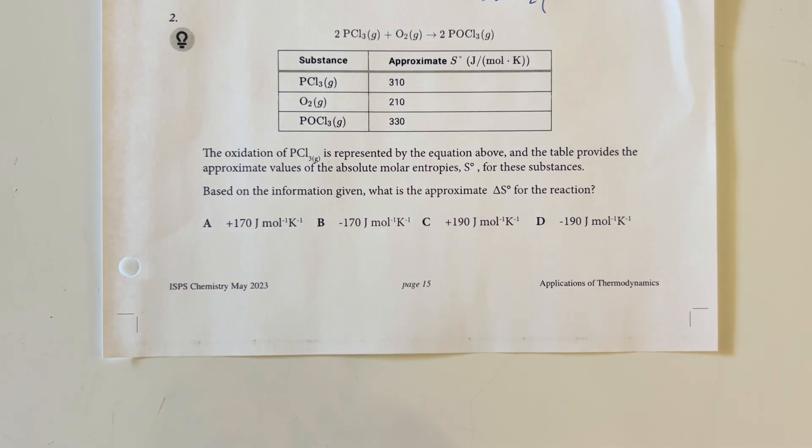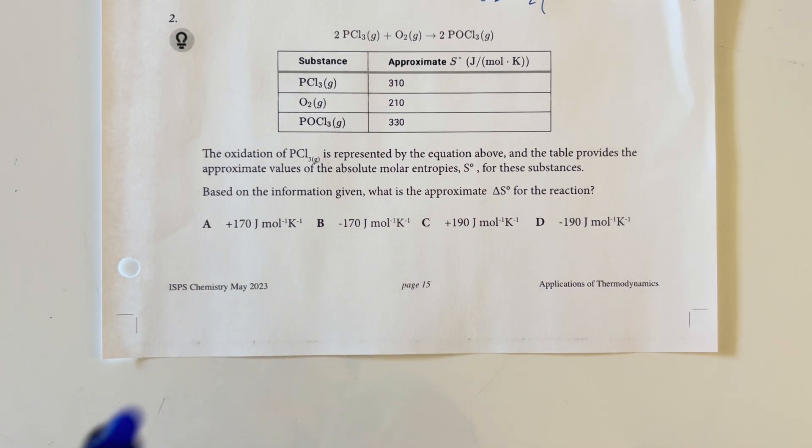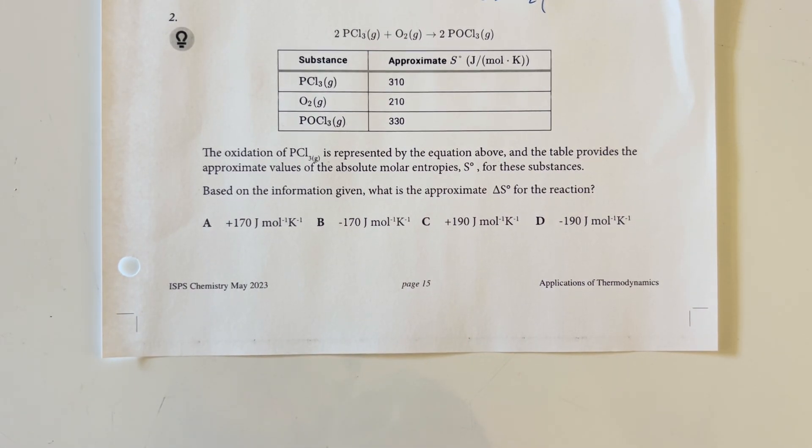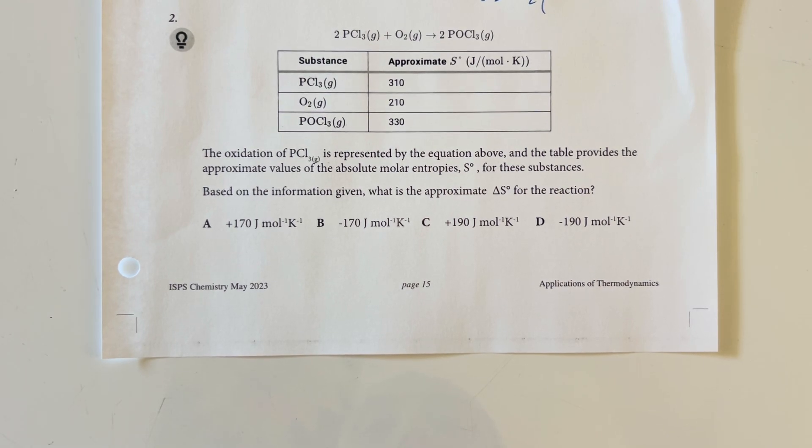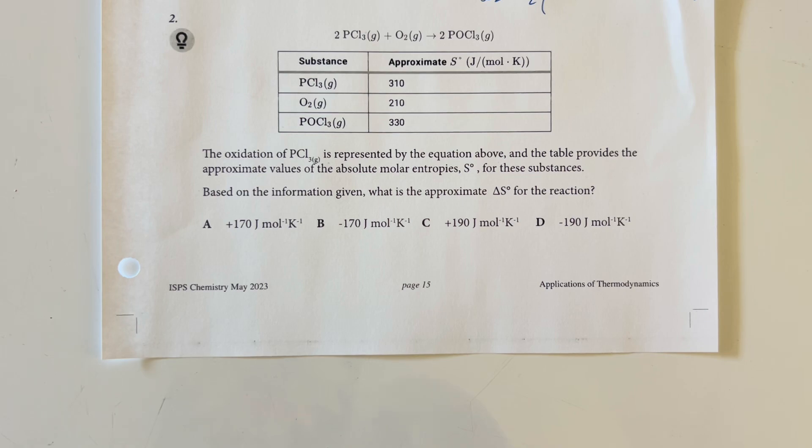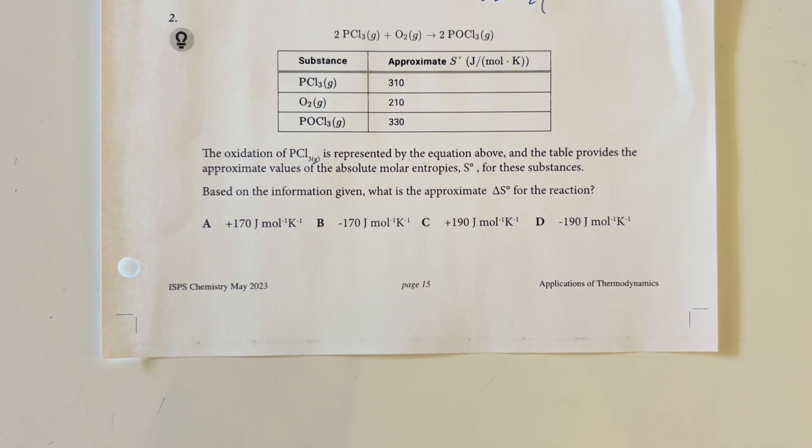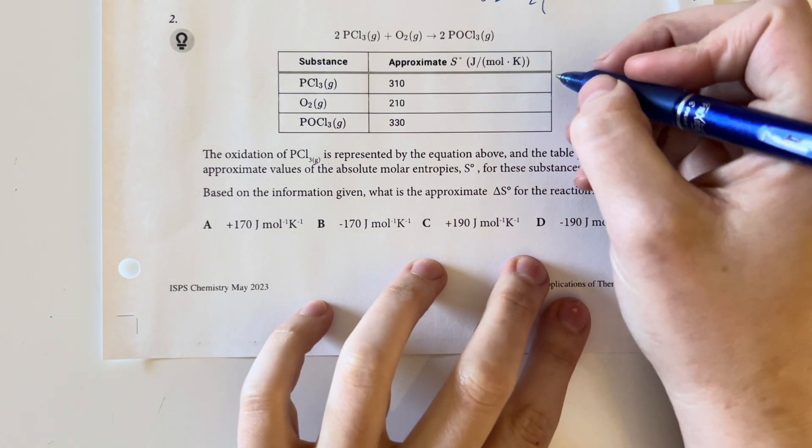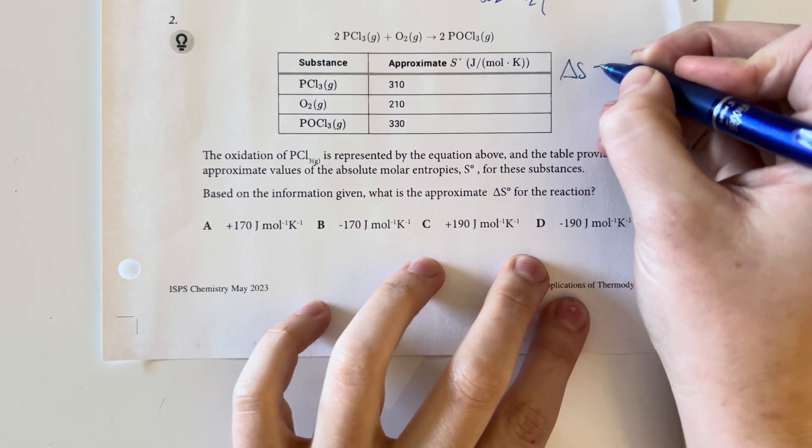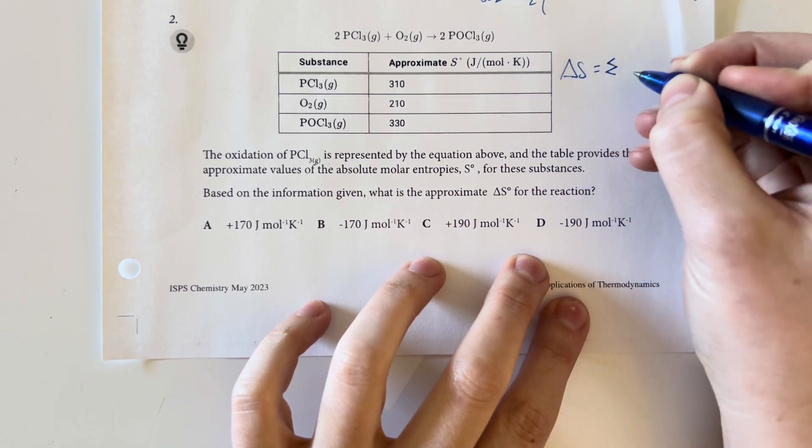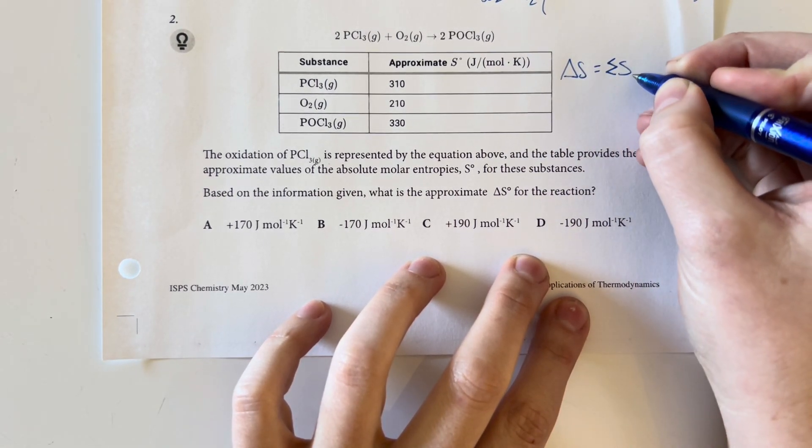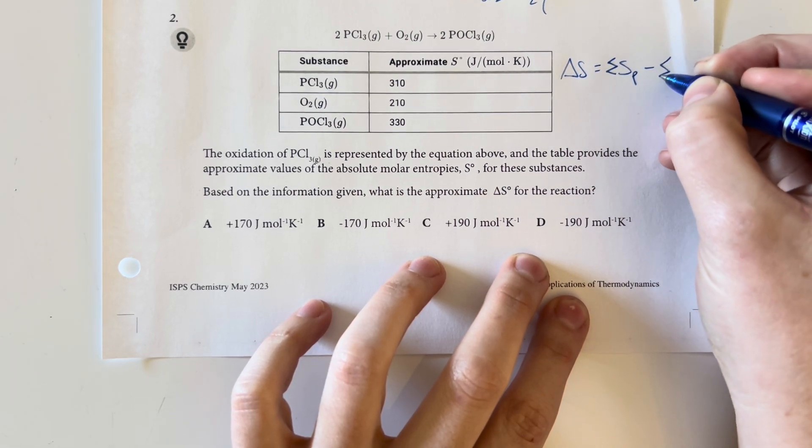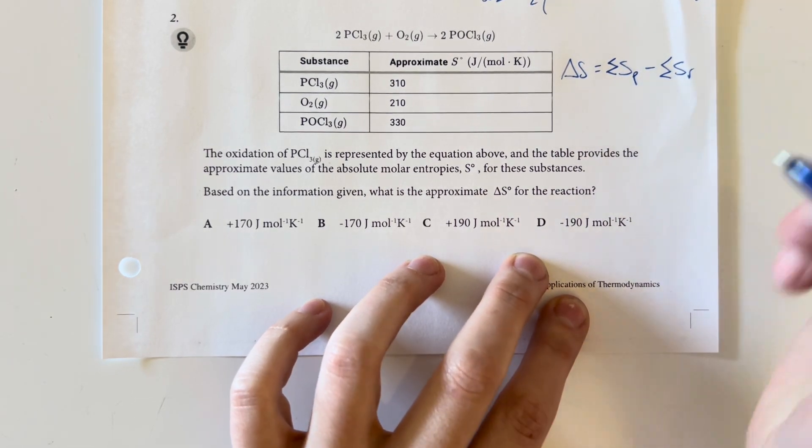The oxidation for phosphorus trichloride is represented by the equation above. The table provides the approximate values for the absolute molar entropies. Based on the information given, what is the approximate delta S for the reaction? Again, delta S is equal to the sum of my entropies for my products minus the sum of my entropies for my reactants.